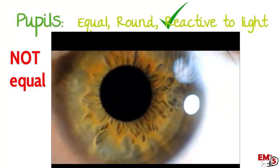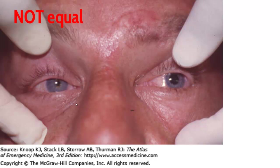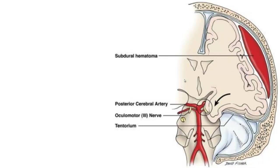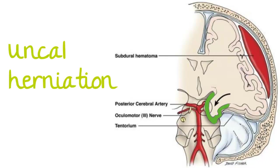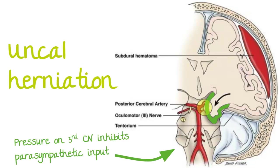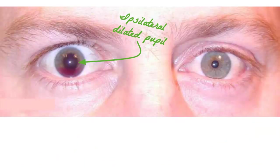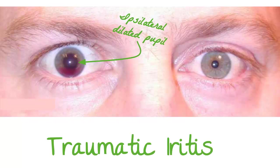What if our pupils are not equal? If we shine light in both eyes and one pupil remains dilated, in the setting of significant blunt head trauma this is really serious — it could be a subdural hematoma causing uncal herniation. With that pressure on the third cranial nerve it inhibits parasympathetic output and the ciliary muscle doesn't constrict. However, if a well-appearing patient comes in saying they were punched two days ago and now have eye pain with a dilated pupil, that's probably traumatic iritis and will heal on its own.